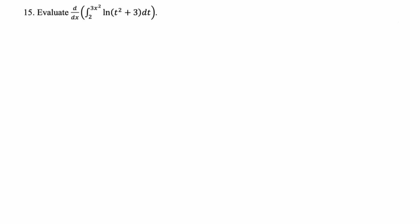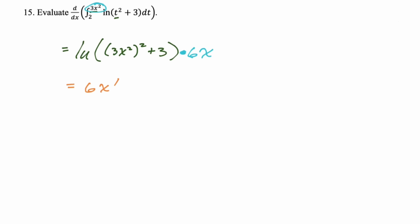Evaluate d/dx of the integral from 2 to 3x² of ln(t² + 3) dt. By the Second Fundamental Theorem, substitute the upper bound in for t: ln((3x²)² + 3). Don't forget the chain rule — multiply by the derivative of the upper bound, which is 6x. The result simplifies to 6x · ln(9x⁴ + 3). This would definitely be multiple choice, so you'd need to simplify fully.